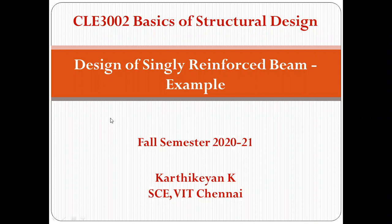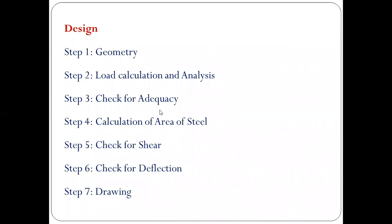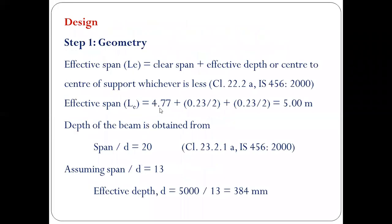Good morning. In today's class we'll be seeing an example for design of a singly reinforced beam. Problem statement: design a simply supported beam for the following data — clear span 4.77 meters, wall thickness 230 mm, live load 10 kilonewton per meter, concrete grade M30, steel grade Fe415, nominal cover M30. The design steps involved are: geometry, load calculation and analysis, check for adequacy, calculation of area of steel, check for shear, check for deflection, and finally the drawing.